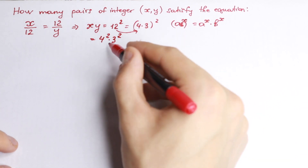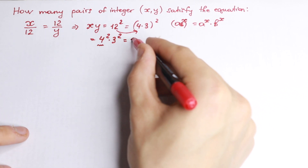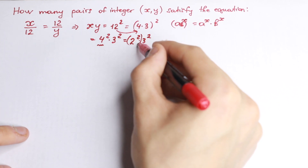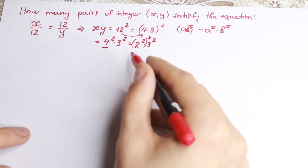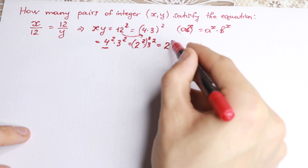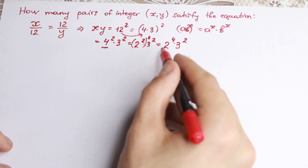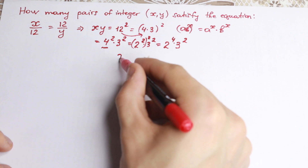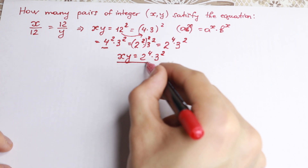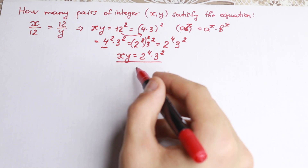Moreover, let's rewrite 4 as 2 squared. As a result we have (2 squared) squared times 3 squared, which gives us 2 to the power 4 times 3 squared. So xy equals 2 to the fourth times 3 squared. This is the main really interesting moment.